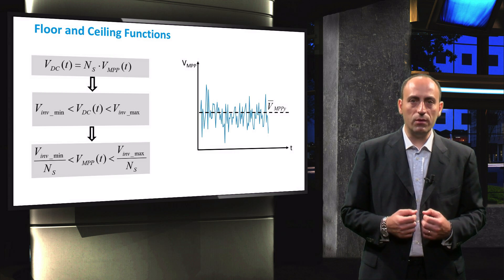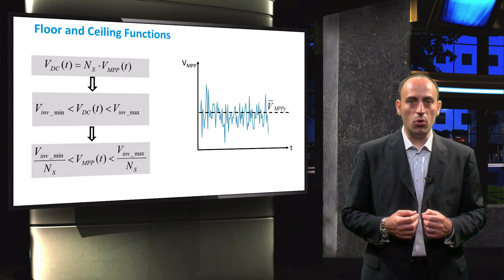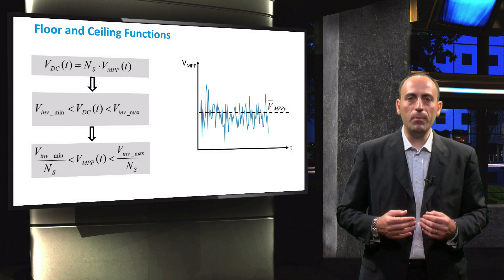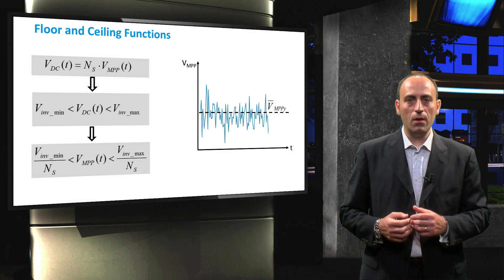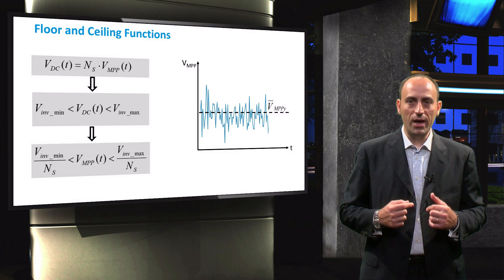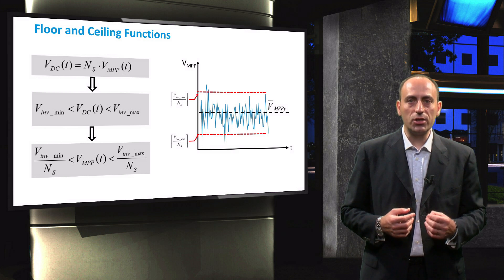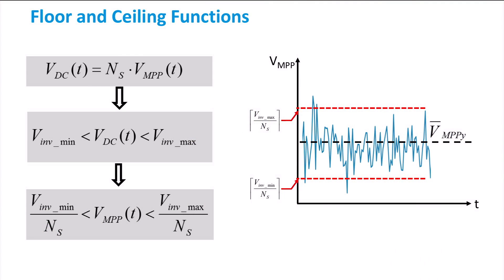By rearranging the terms, the voltage limits of an inverter for a single PV module are related to VMPP and the number of series-connected modules according to the shown equation. Now, if you round up the value of NS, a fraction of the peak voltages in the shown VMPP curves gets cut off. This consequently leads to a small voltage loss and a loss in the output power. In order to minimize this loss, the number of series-connected modules gets rounded down to the nearest integer.